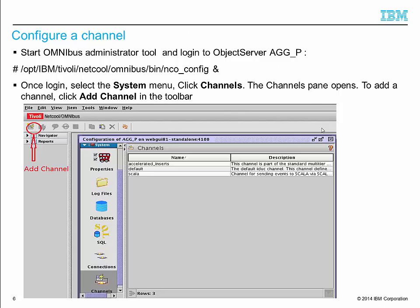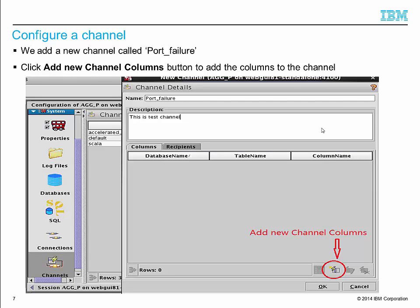Now we are starting to configure AN. We start ncu-config, then log in to object server agg-p. Go to the system menu and click channels. Click add channel in the toolbar as shown in the screenshot. The channel details window opens. Give a unique name for the channel — we call it 'portfolio' in this example.